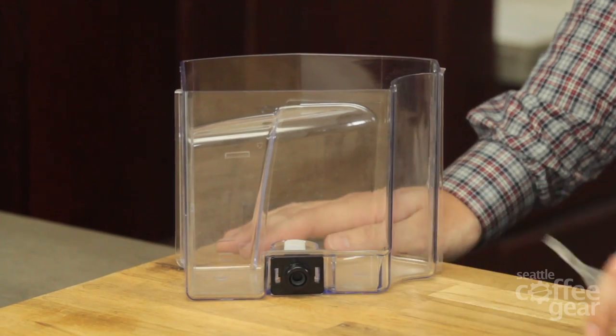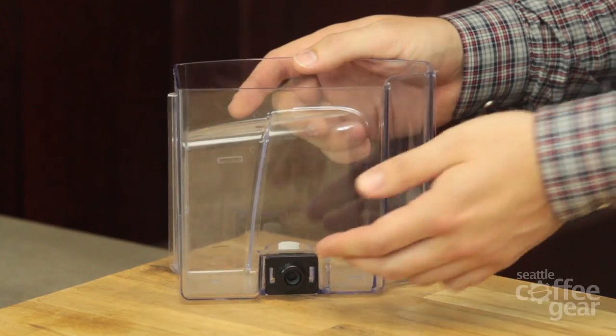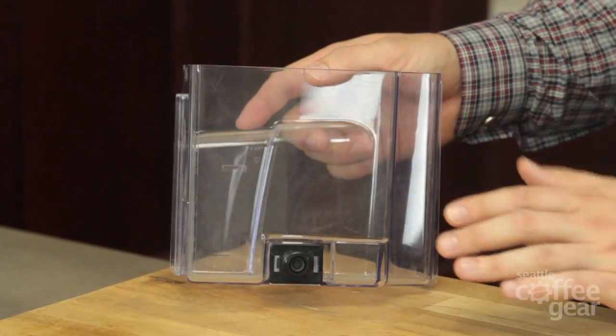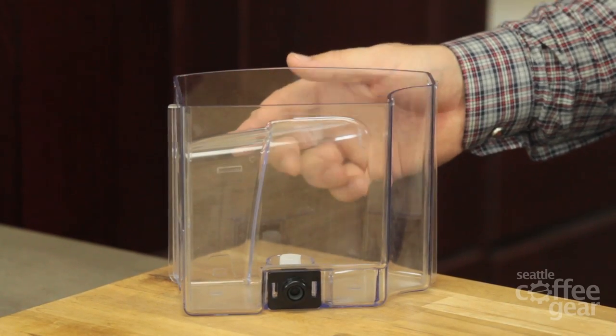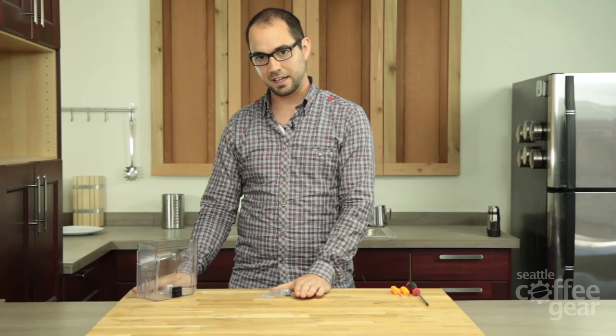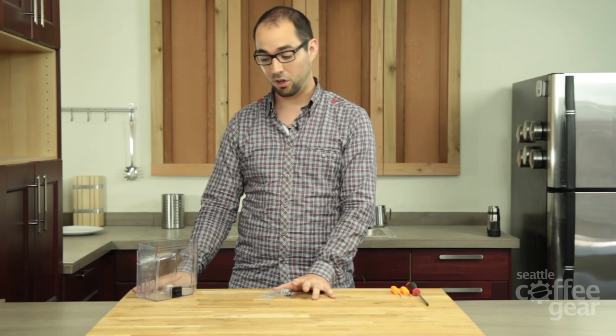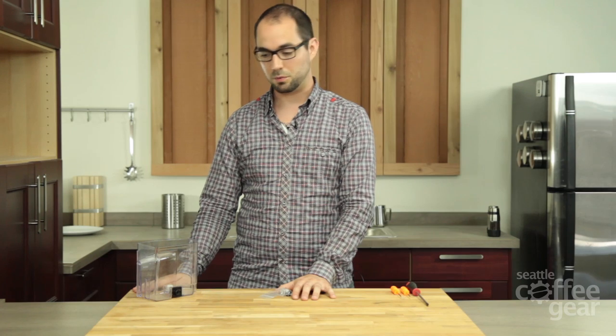So if you have a Saeco water tank where the water tank manifold is on the side wall or the vertical wall, this kit is for you. This goes to a lot of machines, the Odea, Talea, Cynthia, Intelli-Line as well as the X-Small and probably a few others as well.